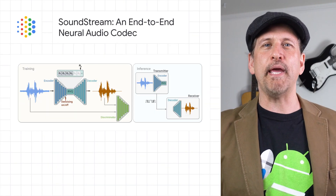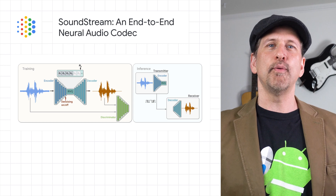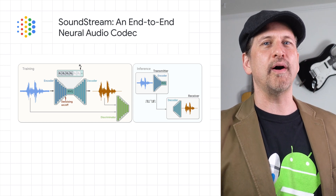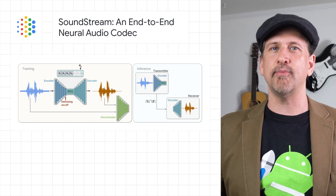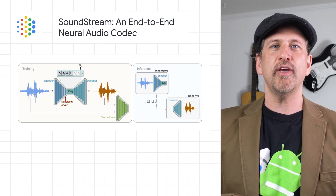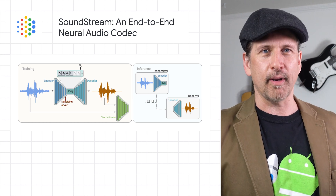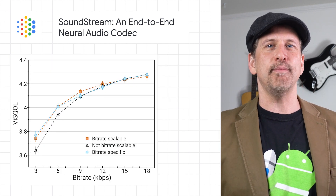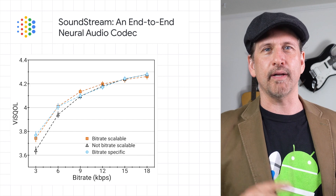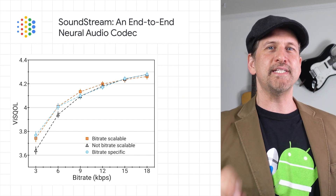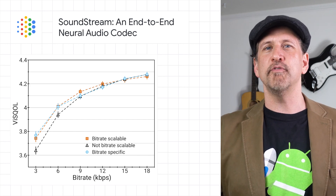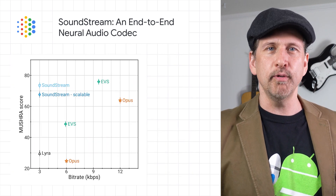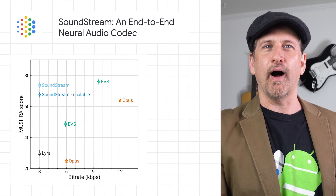We published a paper on Soundstream, a novel neural audio codec that extends our efforts with Lyra by providing higher quality audio and encoding more sound types, including clean speech, noisy and reverberant speech, music, and environmental sounds. Soundstream is the first neural network codec to work on speech and music while being able to run in real time on a smartphone CPU, delivering state-of-the-art quality over a broad range of bit rates with a single trained model. It will be released as part of the next improved version of Lyra. Read more on the post.